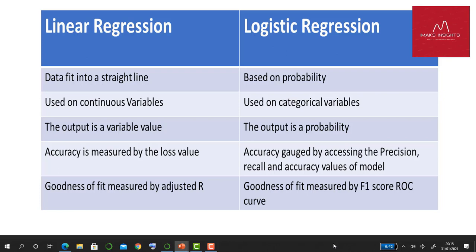Accuracy is measured by the loss value in linear regression, while in logistic regression accuracy is gauged by accessing the precision, recall, and accuracy values of the model. In linear regression the goodness of fit is measured by the adjusted R, while in logistic regression we measure the goodness of fit by looking at the F1 score of the ROC curve.